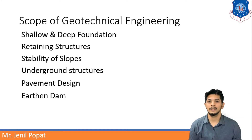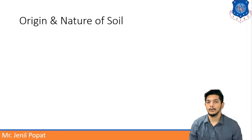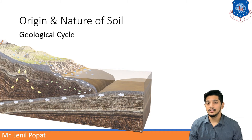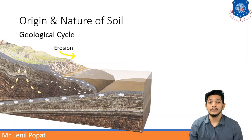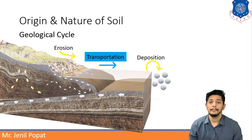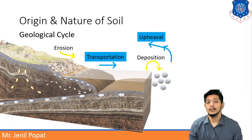These are the basic scopes of geotechnical engineering. Moving further to origin and nature of soil: soil is formed by the geological cycle, which consists of four stages. Stage one is erosion — soil gets eroded from hilly and sloped regions. Then it breaks into particulate matter and gets transported to a different place. Then it gets deposited, and then again it is upheaved through wind, water, ice, and gravity. That is how this cycle works and soil is formed.